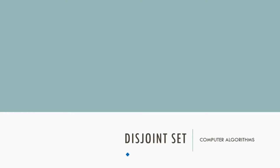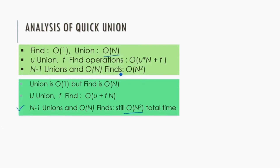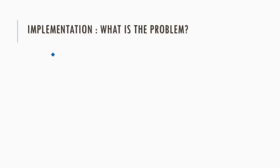In the previous video we discussed about the array and tree based implementation of the disjoint set data structure. In this video we will discuss about the union by rank and path compression based implementation of the disjoint set data structure. If we have some O(n) time complexity operations, then these operations lead to O(n²) total time, so let's try to improve this.